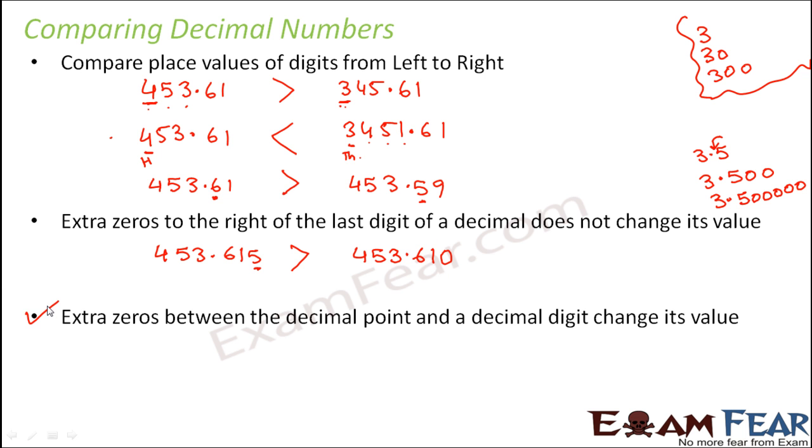Another important point is extra zeros between the decimal point and the decimal digit changes its value. Now, let us say that instead of adding zeros at the end, if you write 3.5 or you write 3.00005, they are completely different numbers. So adding zeros in between, that is adding zeros after the decimal point and before the decimal digit, that makes a huge difference because these digits after the decimal point are called decimal digits.